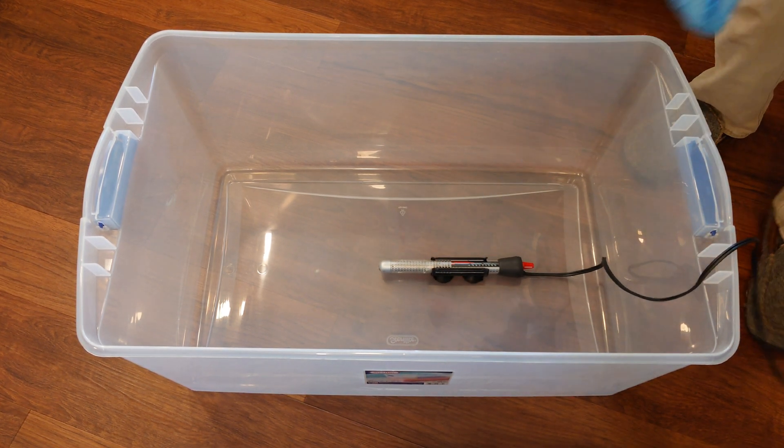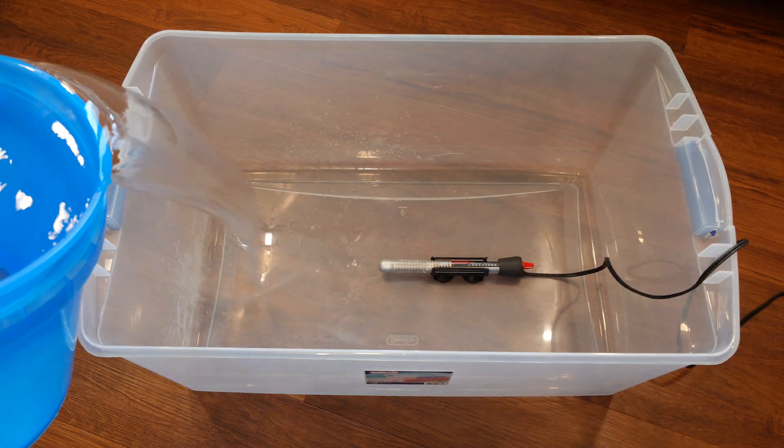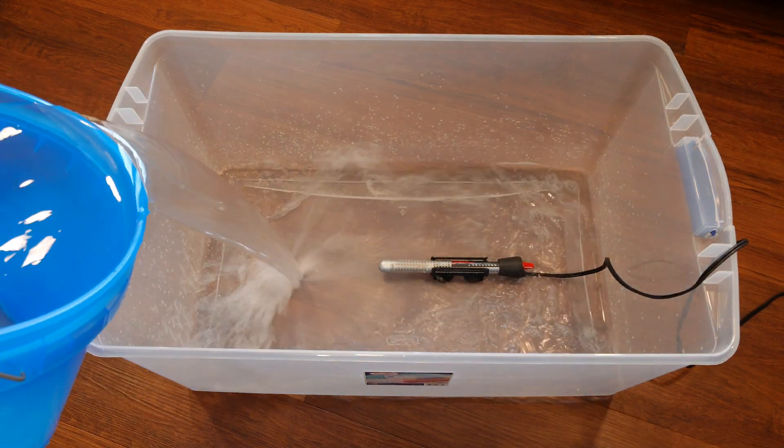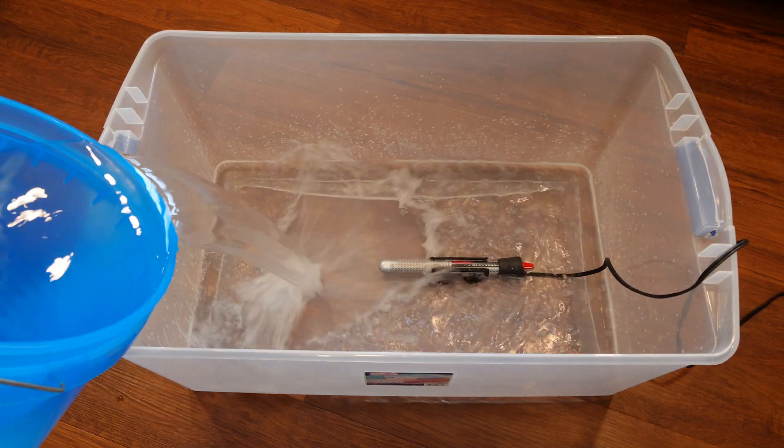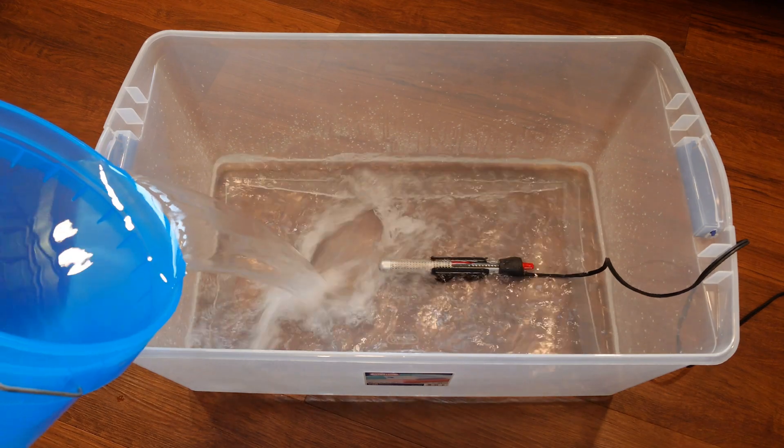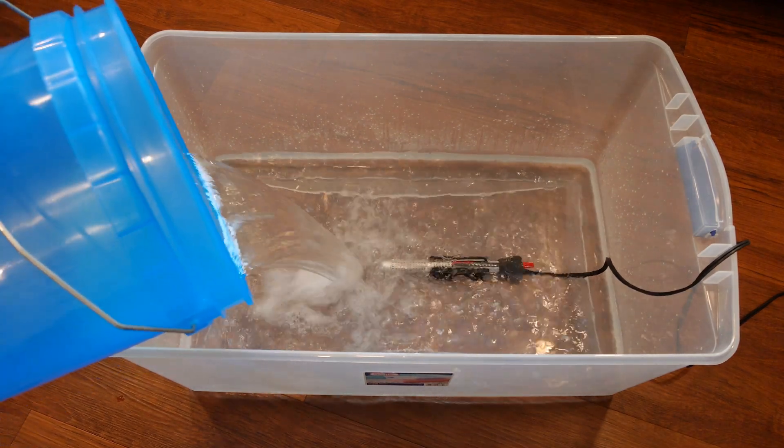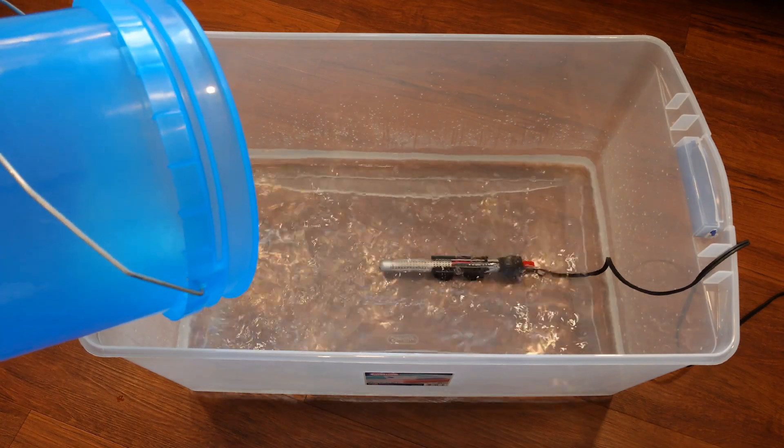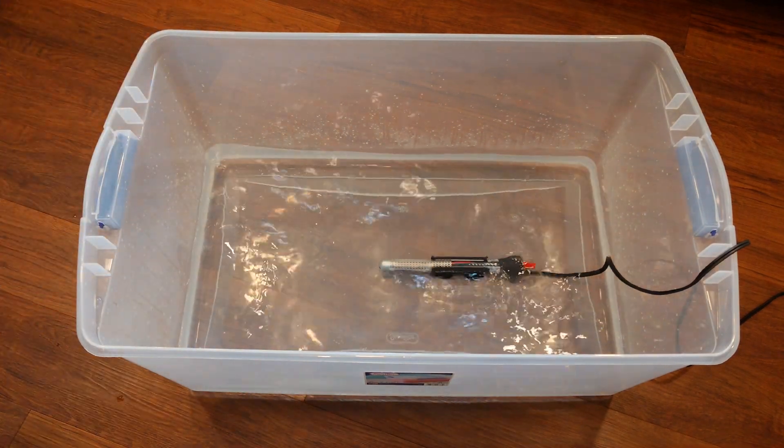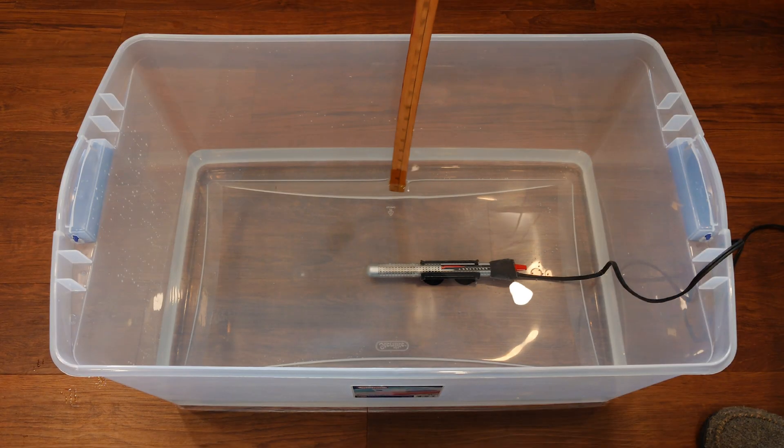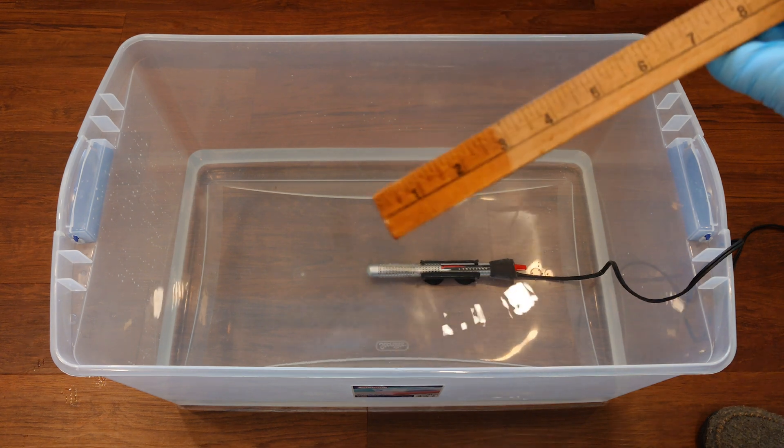Once you have your aquarium heater securely attached to the bottom of your tote, we're going to start adding some water. These aquarium heaters are designed to be completely submerged, so we're going to add enough water to completely cover it plus about an inch. You want about an inch of water above the top surface of your heater. We're going to go ahead and measure here. For the particular heater I'm using, we're at about three inches of water.